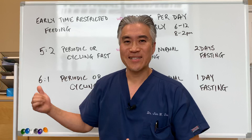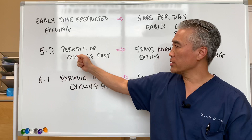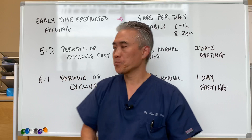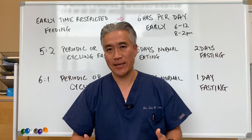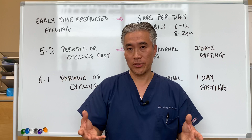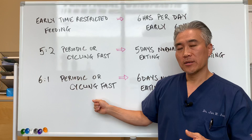Then you have a cycling one where you have 5 days on and 2 days off — we call it a periodic or cycling fast. You're eating for 5 days normally, and then you fast for 2 days, drinking only water. Another popular one is 6 to 1, where you're eating normally for 6 days and then fasting for 1. You can actually use a combination of these — I personally use the 8 to 16 fasting window, and then 1 day a week I will fast.